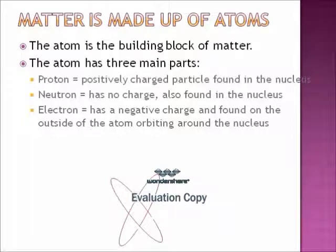The atom has three main parts. The proton is the positive charge particle found in the nucleus. The neutron has no charge — it's neutral — and it's also found in the nucleus. Then the electron has a negative charge and is found on the outside of the atom, orbiting around the nucleus.